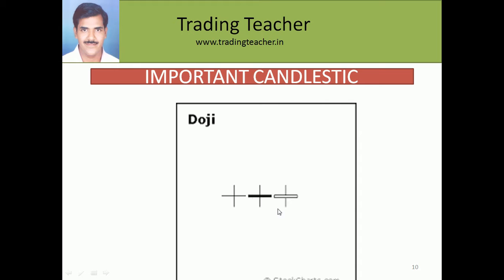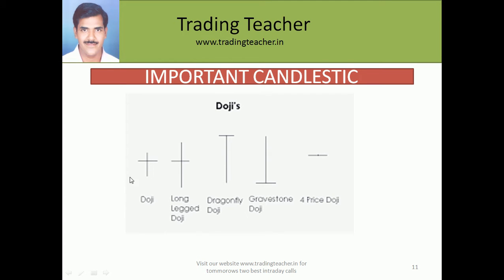A doji can also appear like a doji star. These are the types of doji: simple doji, long-legged doji, dragonfly doji — where high, close, and open are the same — and gravestone doji, which is the opposite: low, open, and close are all at the same price. The fourth type is the four-price doji, where high, low, open, and close are all the same, meaning the stock is barely traded. This four-price doji is generally difficult to identify.